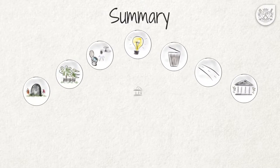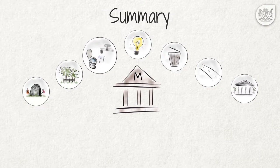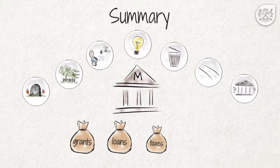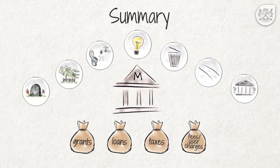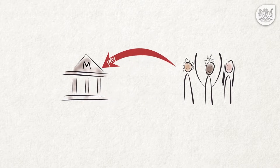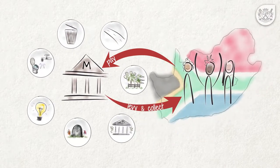Summary. In this video, we explained what basic services municipalities must provide and how they do so. Municipalities provide the services that people use in their day-to-day lives such as water, electricity and refuse removal. In order to provide such services, municipalities need a lot of money which they get through grants, loans, taxes and the fees the municipality charges for the use of services. It is critical that people who do not qualify for free services pay their municipal accounts, so that our municipalities have the resources necessary to deliver and maintain the services to all the people of this country.